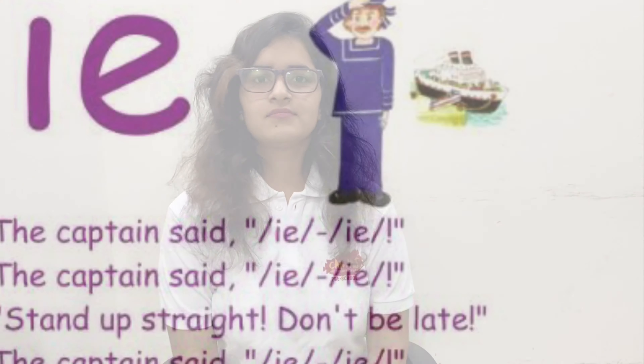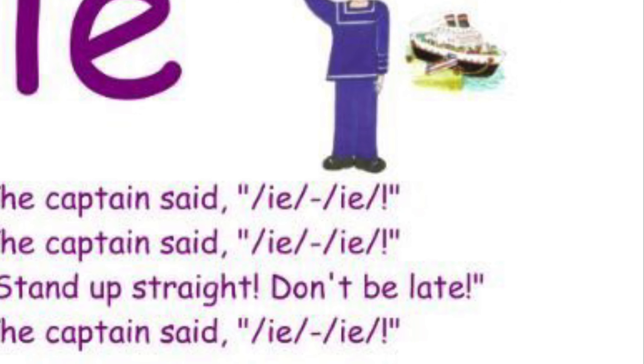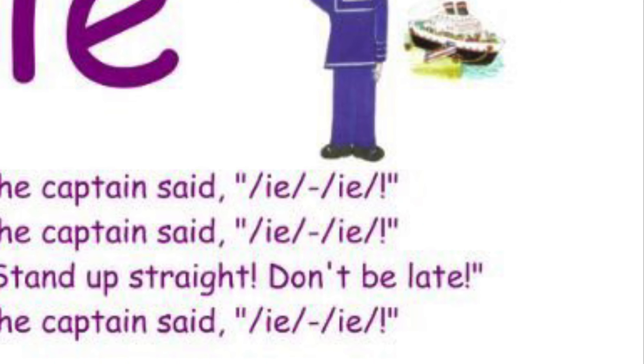So let's learn the diagraphs of group 4. When the letters A and I come together, they make the sound A. For the action, let's pretend that we cannot hear anything — A, A, A. Now let's blend a word: P, A, M makes pain.